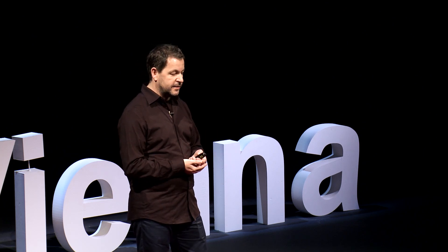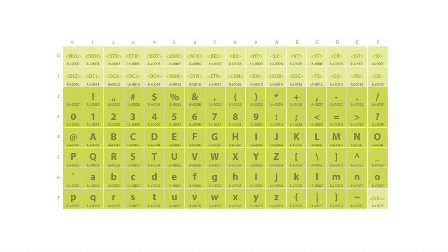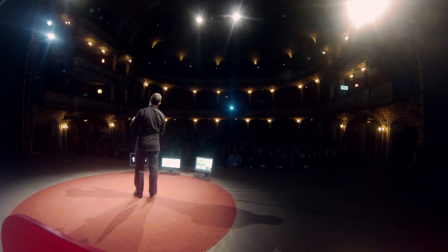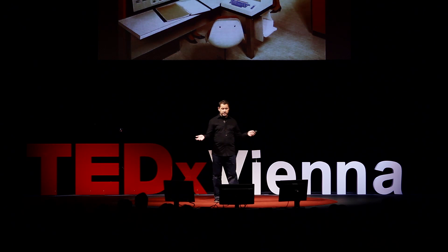ASCII has its birthday right now this year. It was invented by Bob Beamer, one of my favorite heroes, who worked at IBM with his team. Here you see the 128 characters of ASCII. The first two rows are not typographic characters — these are just codes to communicate between machines. In the 60s, these beautiful computers filled whole rooms, and on this photo we witnessed the marriage of the computer and the typewriter.